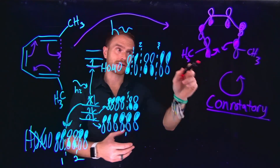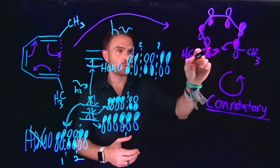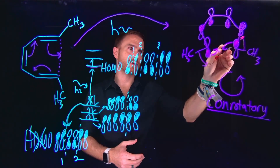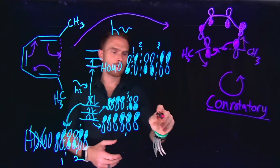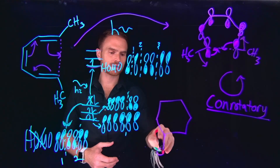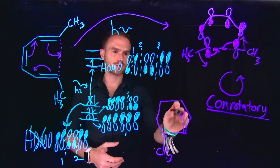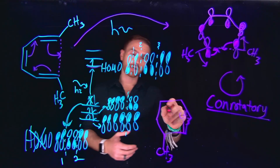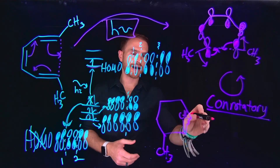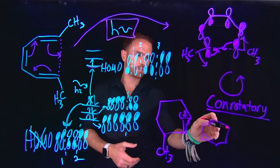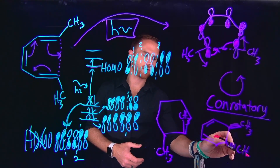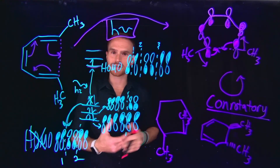Now let's think about what happens to the substituents. If this one is moving in this direction, it will eventually face down, and this substituent is moving in the opposite direction, so it's going to face up. Therefore, when we form this new sigma bond, one substituent moves down and the other moves upwards. This means the predominant structure formed under the presence of light is a regioisomer where the substituents are trans to one another. To generate the trans isomer, we need to use a photochemical reaction as opposed to heat.